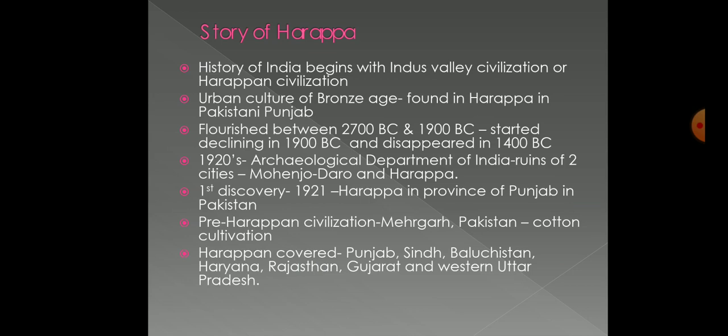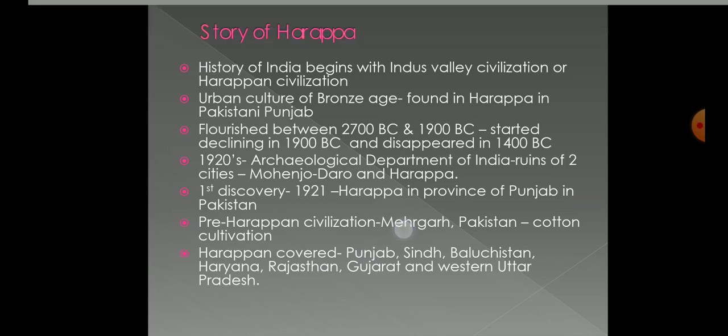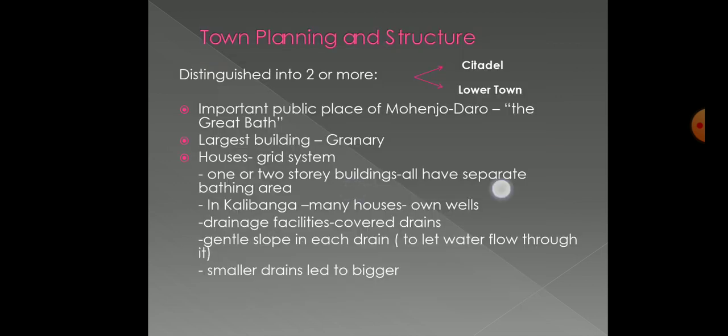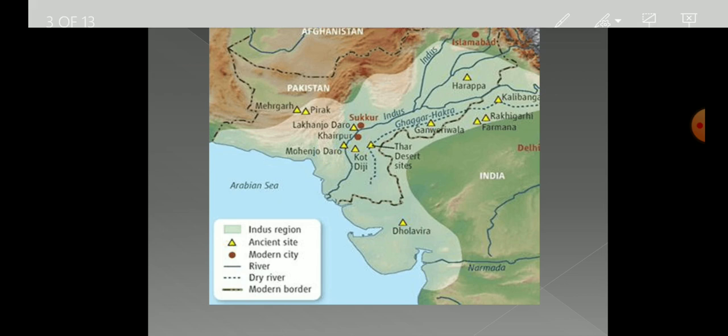The Harappan civilization covered Punjab, Sindh, Balochistan, Haryana, Rajasthan, Gujarat, and Western Uttar Pradesh. Don't forget to see all these places with the help of a map. Here I am showing you two important places: Harappa and Mohenjodaro.